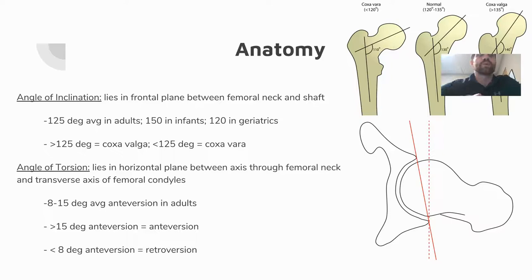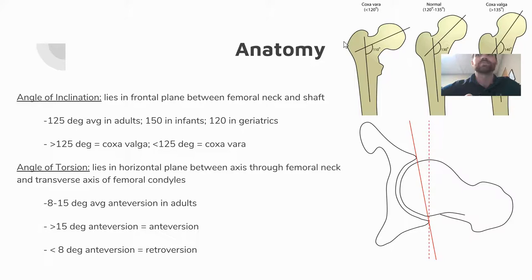While there are norms for alignment, not everyone falls into them. The angle of inclination is the angle formed by the long axis of the femur and the femoral neck. The norm is about 125 degrees in adults — 150 degrees in infants and 120 degrees in geriatrics, decreasing over time with weight bearing. Coxa valga refers to an angle greater than 125 degrees, and coxa vara refers to less than 125 degrees.